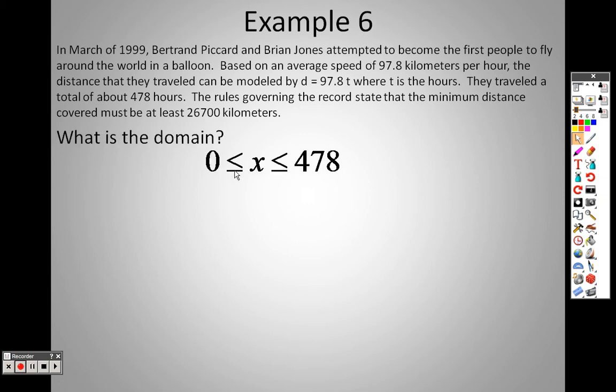So, what's the domain? The domain is what we can plug in for X. What can your X be? Okay, well, X in this problem isn't an X. X is actually T because here's your equation. D equals 97.8 T. Or, if we looked at it like this, it could be Y equals 97.8 X. So, your X is time.